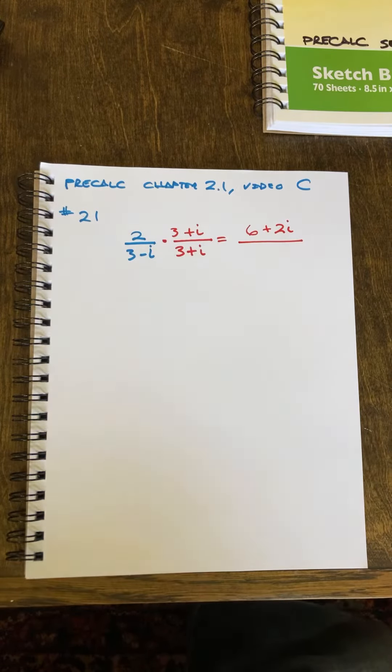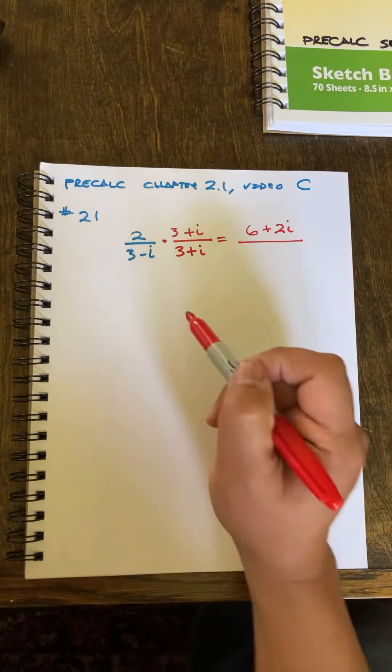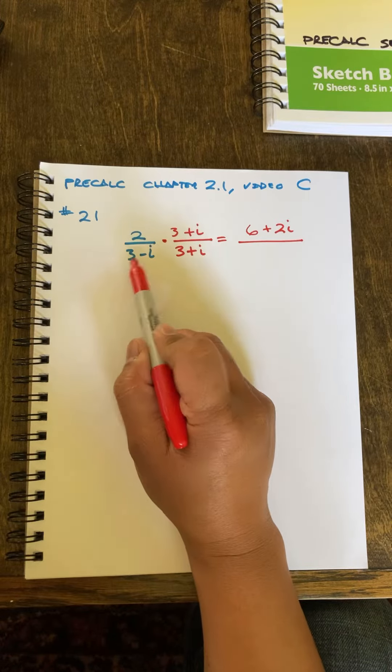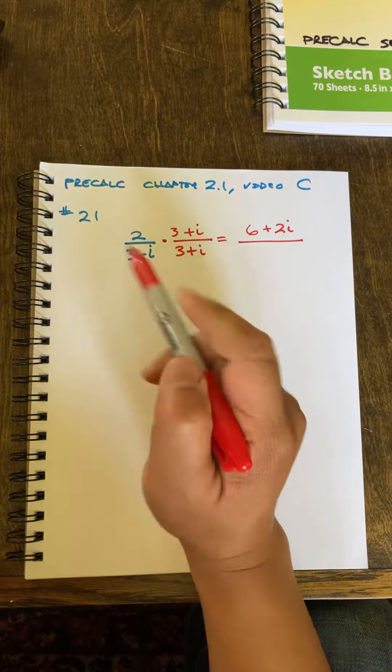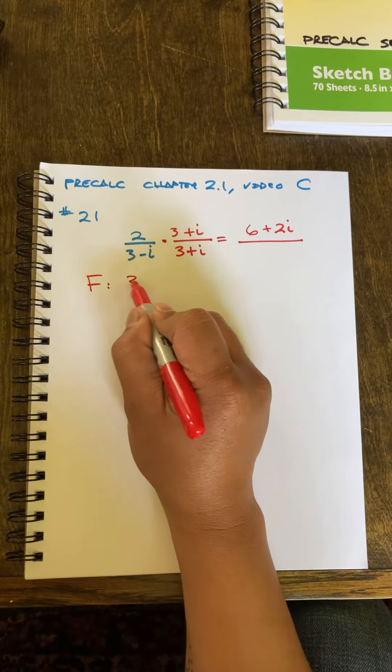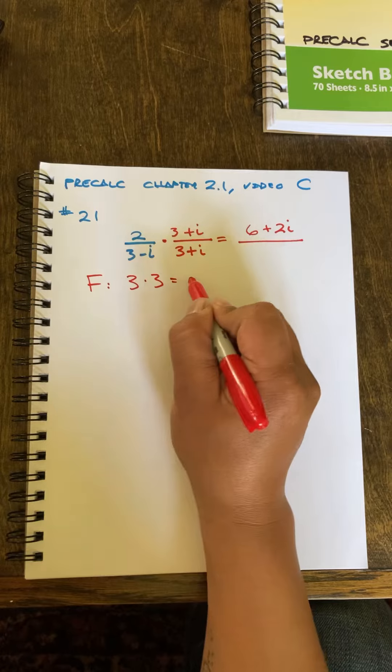In the denominator, I'm going to use my FOIL method. 3 times 3 is my first term. I'll blow it all out here. 3 times 3 equals 9.